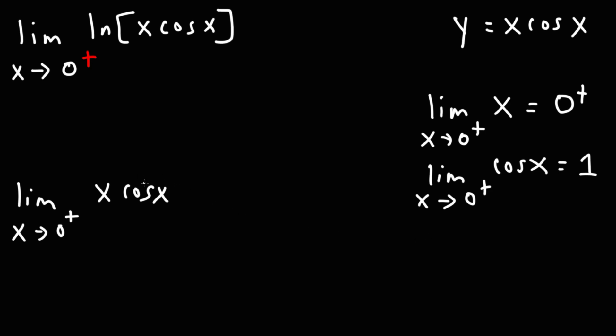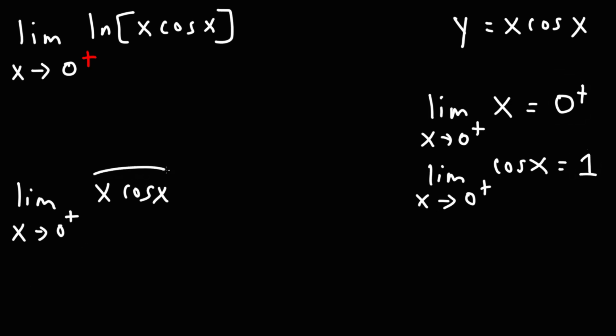If we put these two together, 0 from the right times 1, we get x cosine x, which is going to be 0 from the right. Meaning it's going to approach 0 from the right side — it's going to be above 0 but getting closer to 0. It's not going to be less than 0. If it were less than 0, we'd be approaching from the left, but we don't have that.